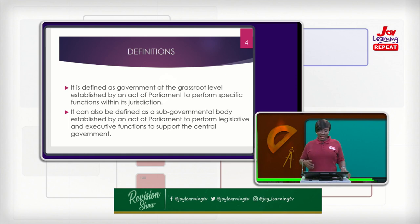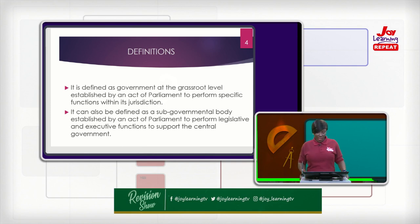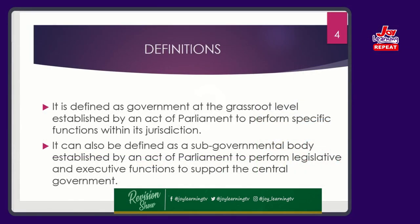Local government can also be defined as a sub-governmental body established by an act of parliament to perform legislative and executive functions to support the central government. In Ghana, we have a unitary system where all powers and functions are located at the centre, which is the central government. It is this central government that, through an act of parliament, puts in place a sub-governmental body — that is, a governmental body that assists the central government to perform some functions.